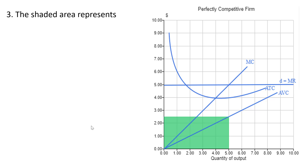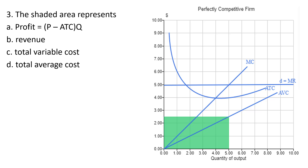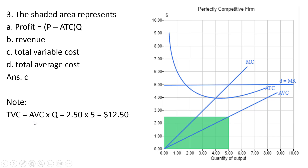Question three. The shaded area represents profit, revenue, total variable cost, or total average cost. The correct answer is total variable cost. At five units of output, average variable cost looks to be two dollars and fifty cents. Total variable cost is average variable cost times quantity, so two point five times five gives us twelve dollars and fifty cents. The dimensions of this rectangle are two point five width and a length of five.